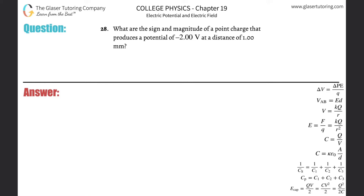Number 28. What are the sign and magnitude of a point charge that produces a potential of negative two volts at a distance of one millimeter? So here's the charge — we don't know what it is. We know that the distance from that charge is going to be one millimeter, the radius. Check out number 25 for more detail. The radius here is going to be 1×10⁻³ meters.